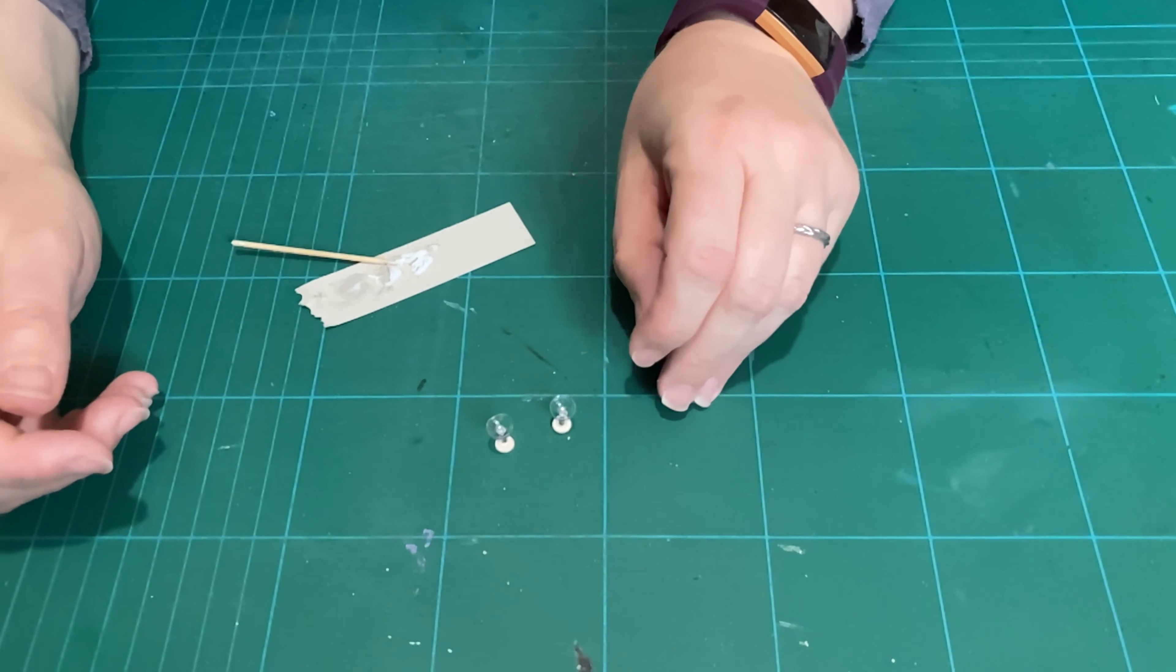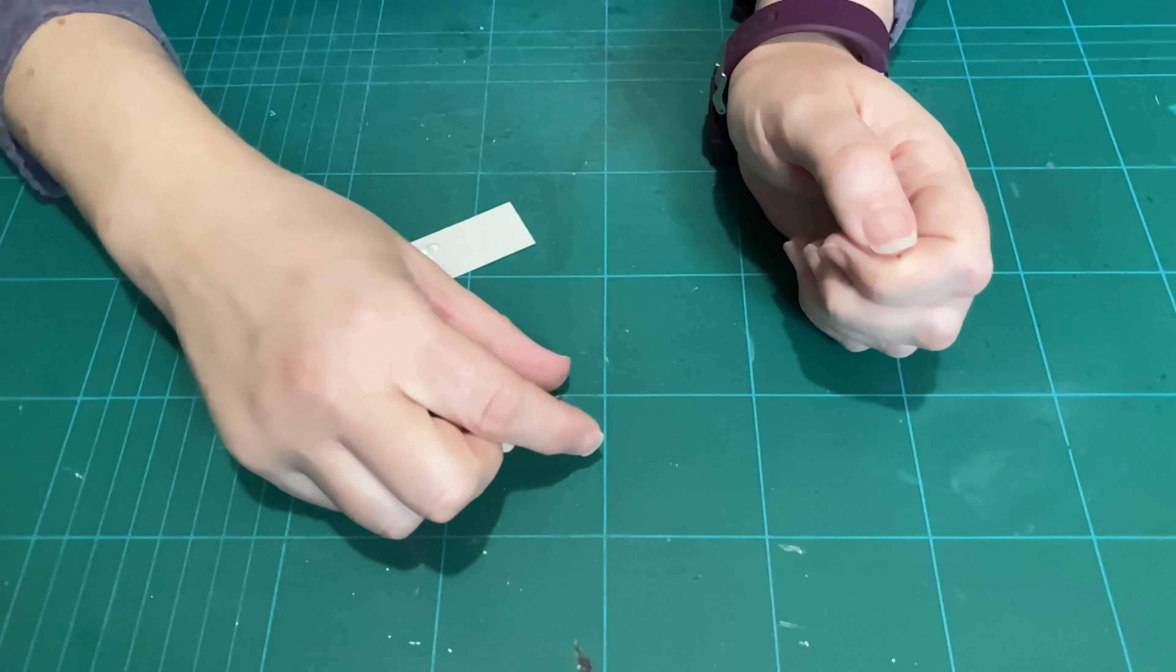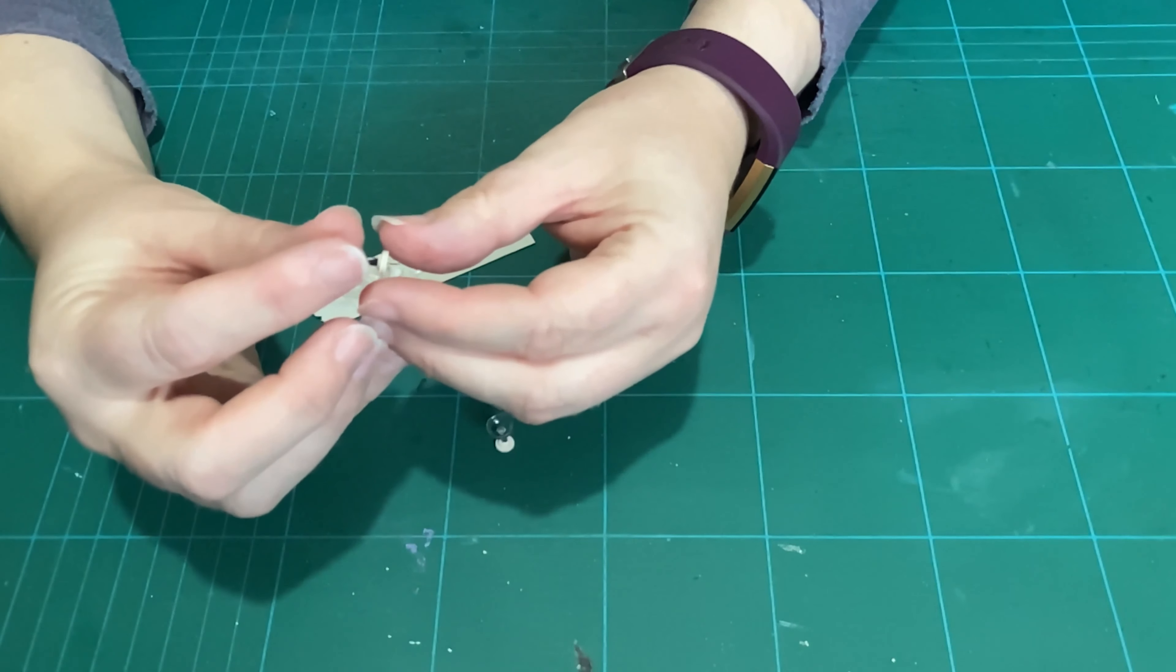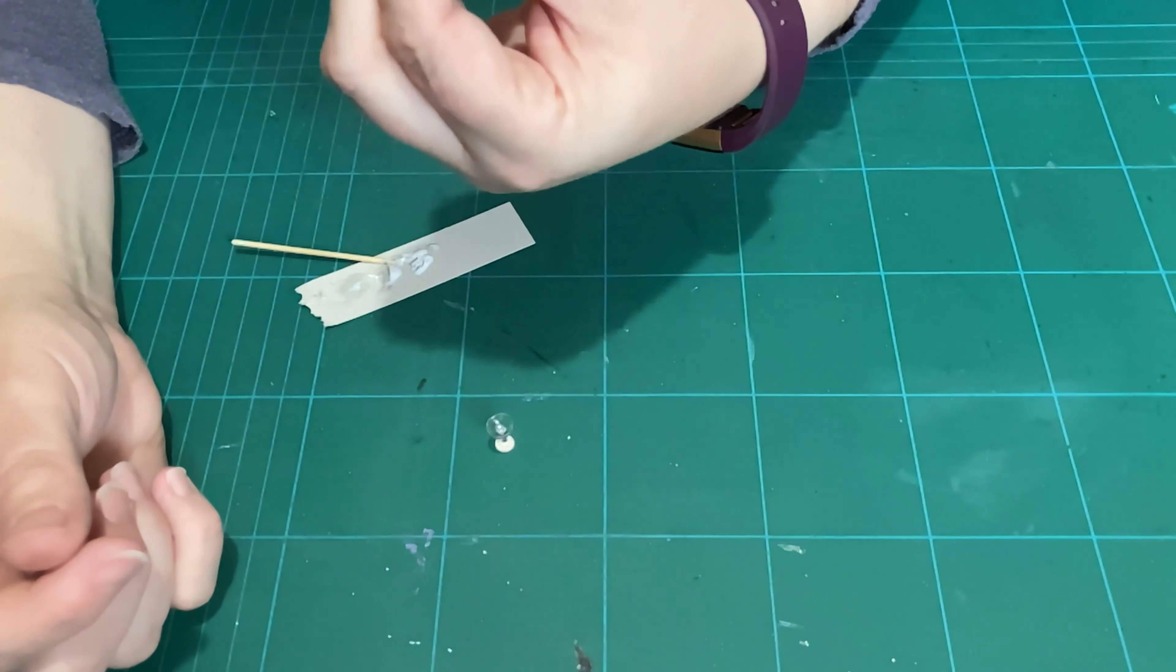Now I've already done the other one and then something went wrong, but we won't talk about that. But there we have the basic chalice shape. Now obviously at the moment it doesn't look very attractive, which is why the next step is paint.